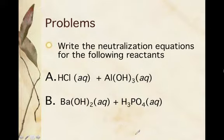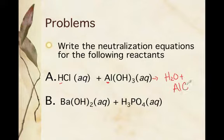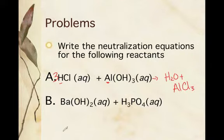If I want to write the products of these neutralization reactions, the products are water and a salt. For hydrochloric acid reacting with aluminum hydroxide, the hydrogen and aluminum switch spots. We get AlCl₃ — aluminum is a 3-plus charge, so we need a 3 there. Now to balance it, the chlorines aren't balanced, so I put a 3 in front of HCl. I have 3 oxygens and 6 hydrogens on this side, so I need a 3 in front of water. Now it's balanced.